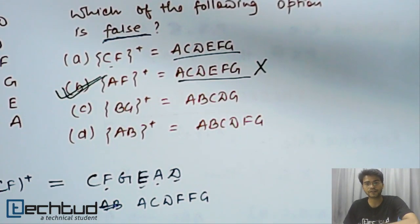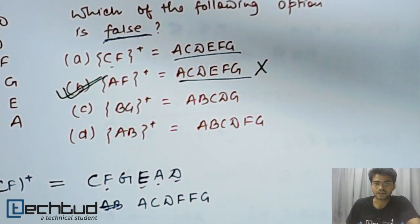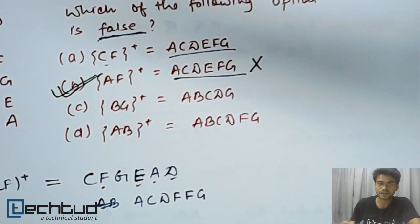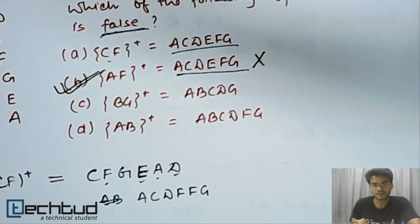So, likewise, we can go and determine closure of an attribute that is X closure. I hope you understand it. If you have any question on this, please ask your question in doubt section, we will be answering it. Thanks for watching.